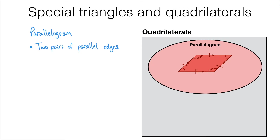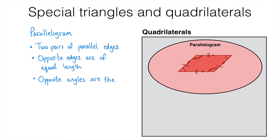A parallelogram also has other properties that follow from this. The opposite edges are of equal length — the double dashes show two sides are the same length as well as being parallel, and the single dashes show the other two edges are also the same length as well as being parallel. Finally, the opposite angles are also the same size. If you're not sure about what these symbols mean, go back to the video for lesson G1A. To sum up: a parallelogram has two pairs of opposite parallel and equal sides, and two pairs of opposite equal angles.